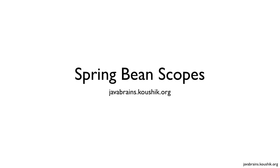In this tutorial, we're going to talk about the bean scopes in Spring. We know that Spring provides beans by instantiating and configuring them depending on whatever values we provide. But when is this happening, and how is this happening? We're going to look at it in a bit more detail in this tutorial.